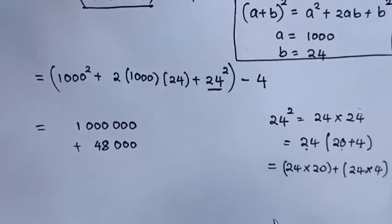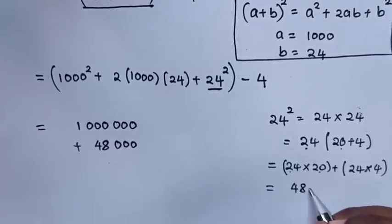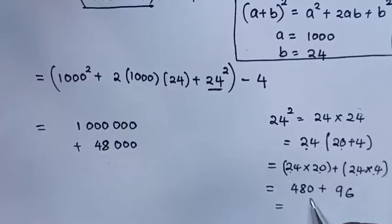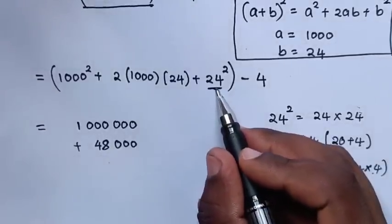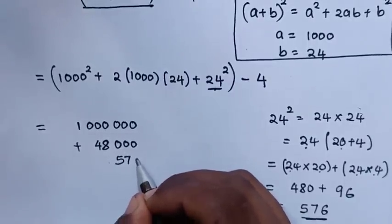This will be 24 times 4 is 96. The sum of this is 576. So this 24 square is 576.